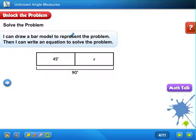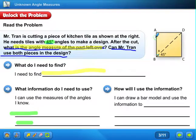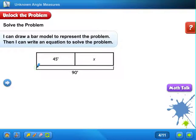I can draw a bar model to represent the problem. Then I can write an equation to solve the problem. Just stick with me on this bar model and see if you understand it. So 45 and 90. I know that this whole thing right here equaled 90. So that's where I get the 90.